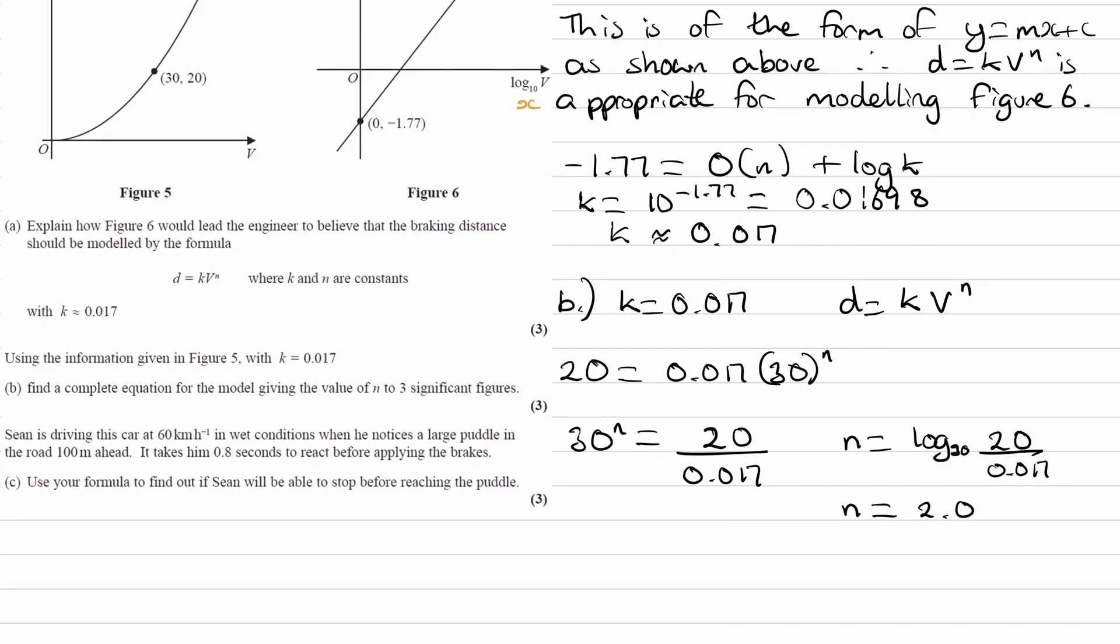So n equals log to the base 30 of 20 over 0.017, and that gives us n to be 2.079, or to three sig figs 2.08. So then our answer for our complete equation will be d equals k, which we already had from earlier, 0.017 times our variable v to the power of our constant n, which we just worked out to be 2.08.